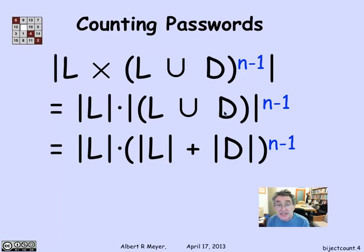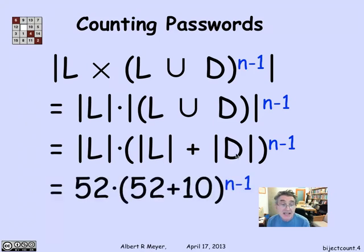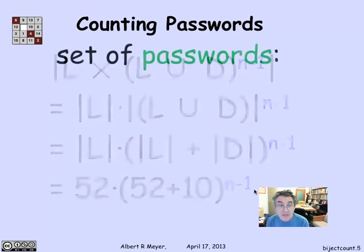L union D, since letters and digits don't overlap, by the sum rule, the size of them is just |L| plus |D|. And so I get this nice formula: 52 letters times (52 letters plus 10 digits) raised to the n minus first power.